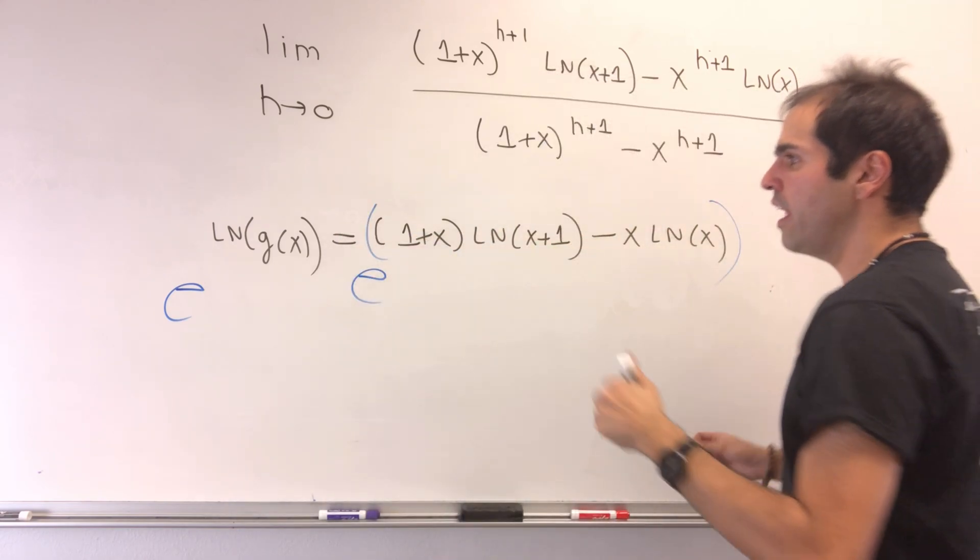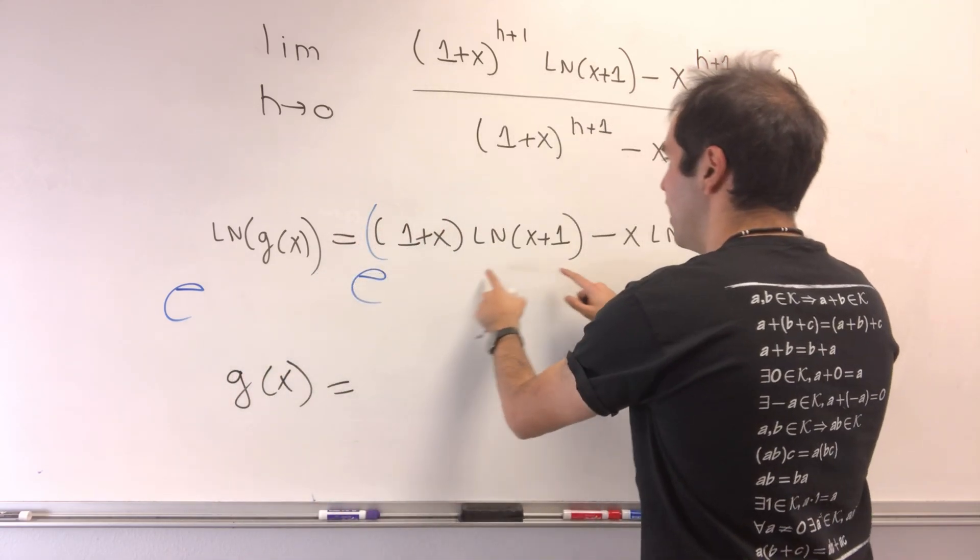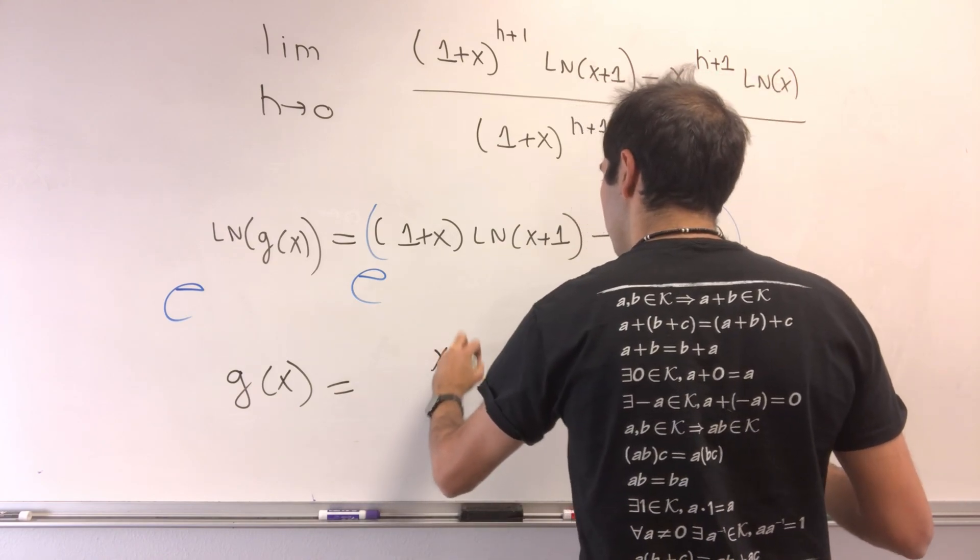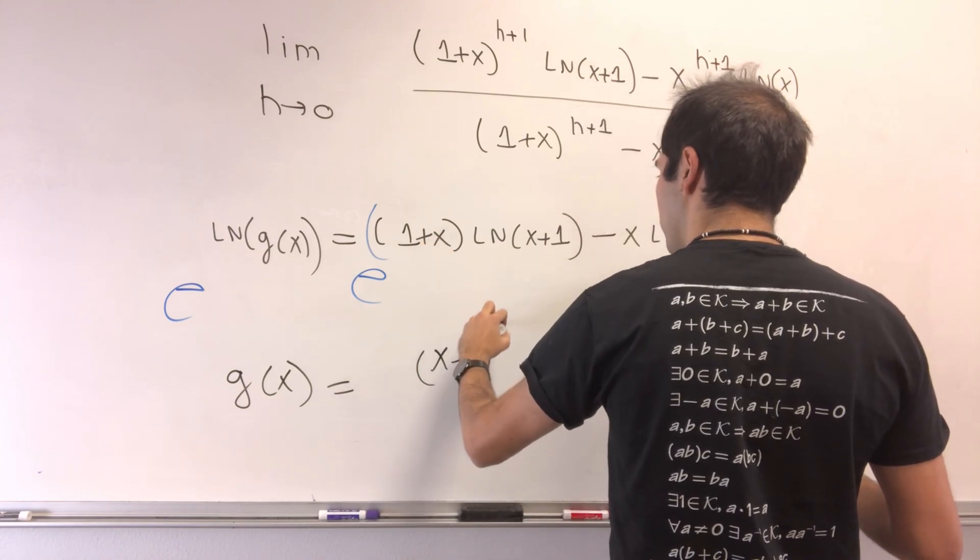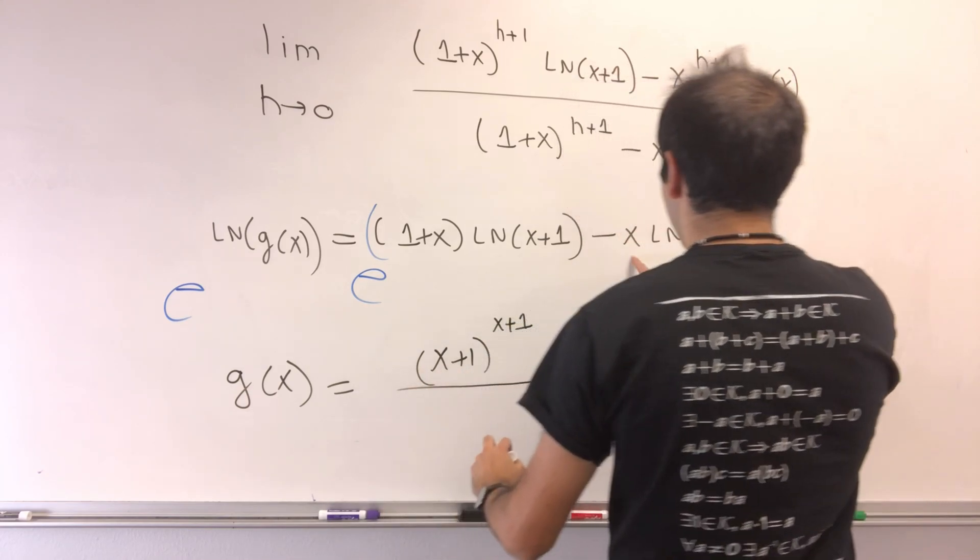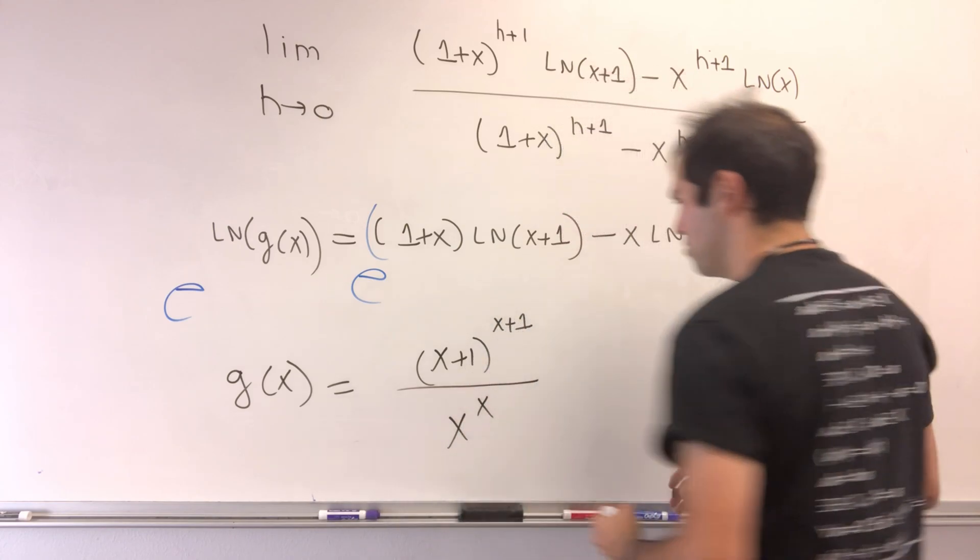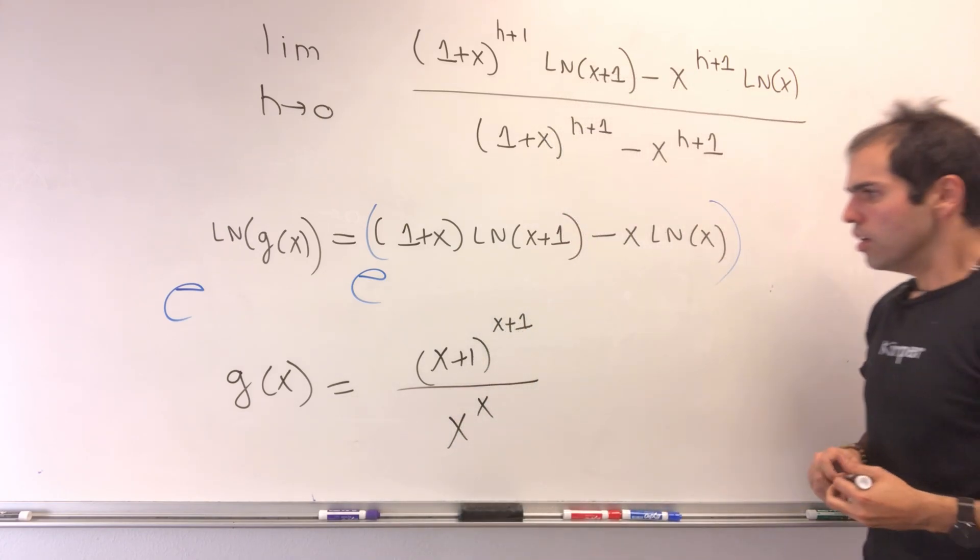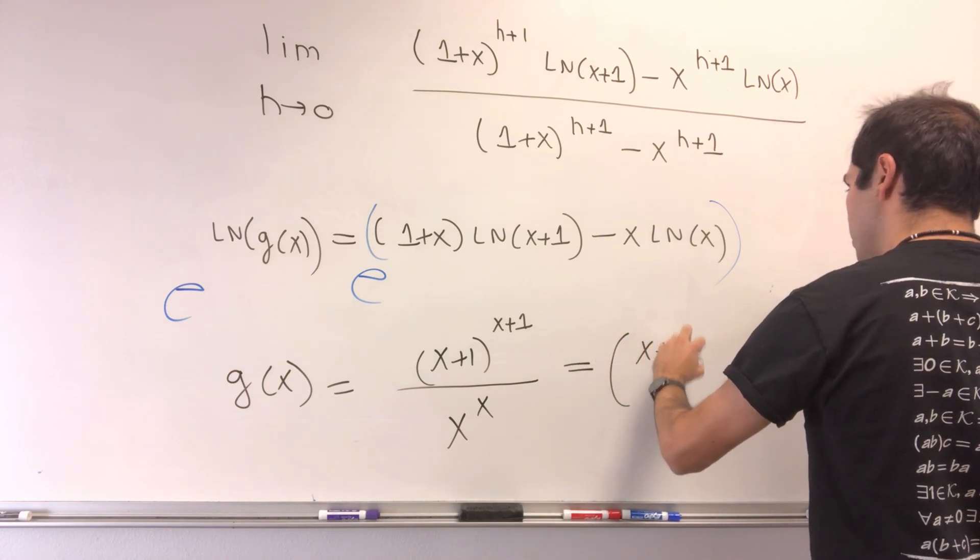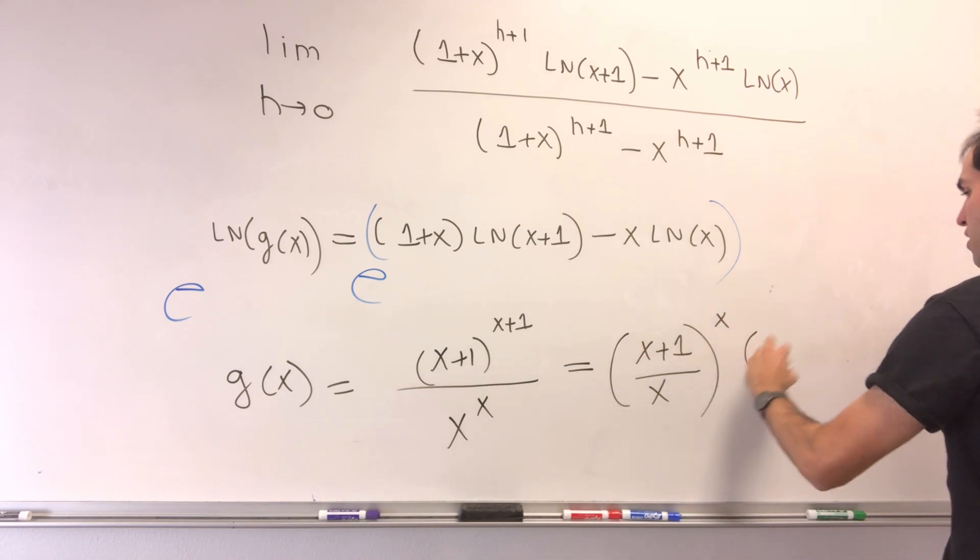Then, on the one hand, we get g of x. On the other hand, e of ln of x plus 1, that is x plus 1, to the x plus 1, and then e minus that becomes, you know, 1 over, so we get x to the x. So we have that, which if you want, you can just rewrite as x plus 1 over x to the x times x plus 1.